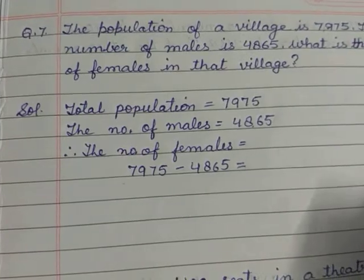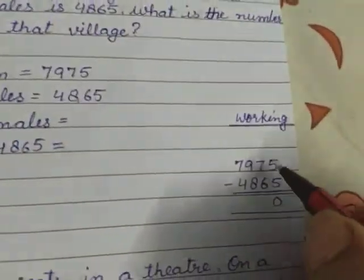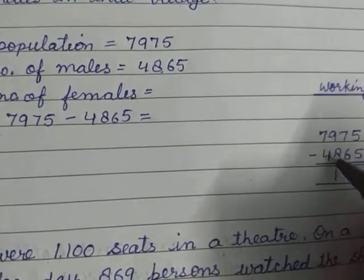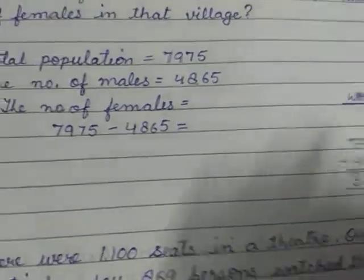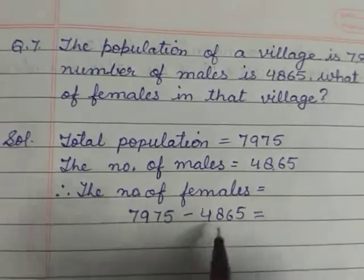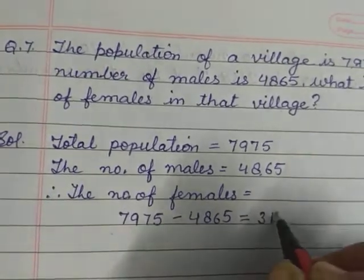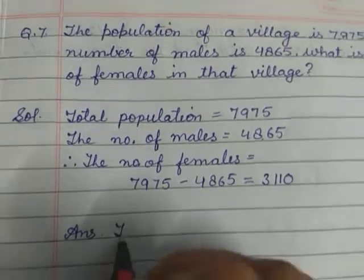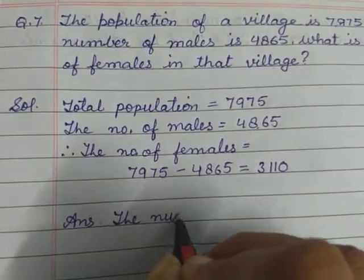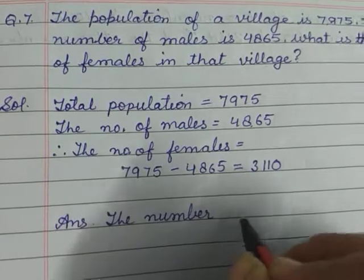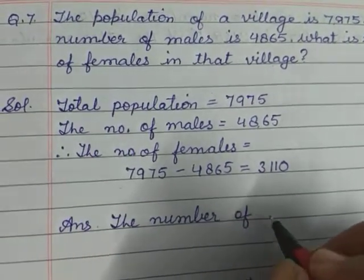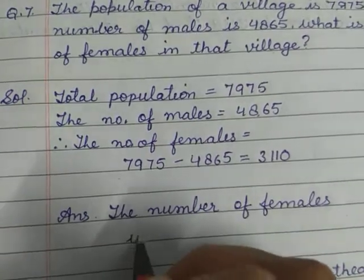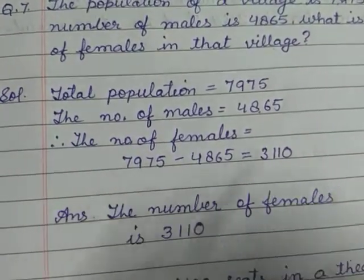5 minus 5 is 0, 7 minus 6 is 1, 9 minus 8 is 1, and 7 minus 4 is 3. Toh answer likhenge: 3,110. The number of females is 3,110.